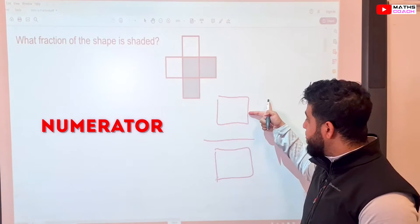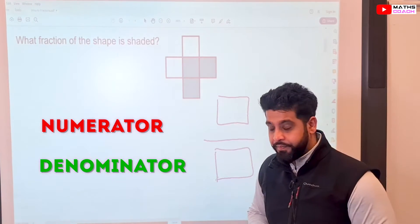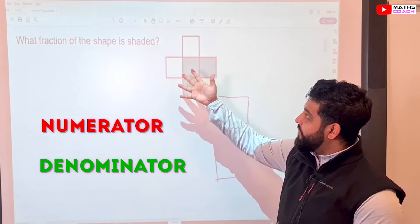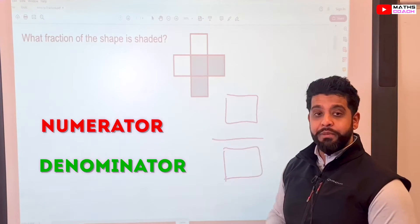This is called a numerator, and this is called a denominator. If you have a look at this question that we have here, what fraction of the shape is shaded?